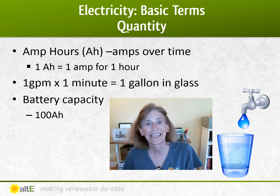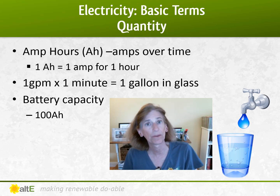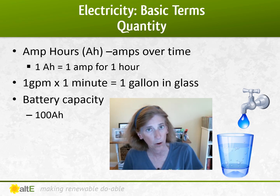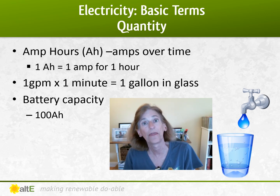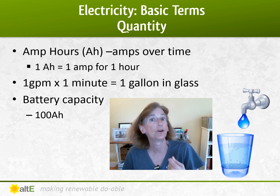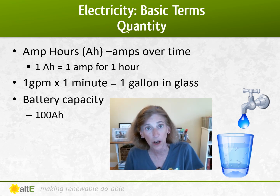Amp hours is the quantity of amps over time. So if something is drawing an amp of current for an hour, it will have used one amp hour. So that is different from how fast — that's how much. Just like the water analogy we've been using: if you have water flowing at one gallon per minute, after one minute you will have one gallon of water.